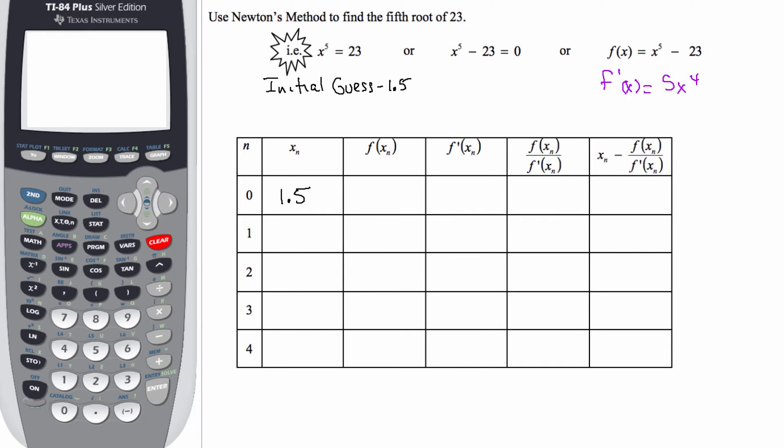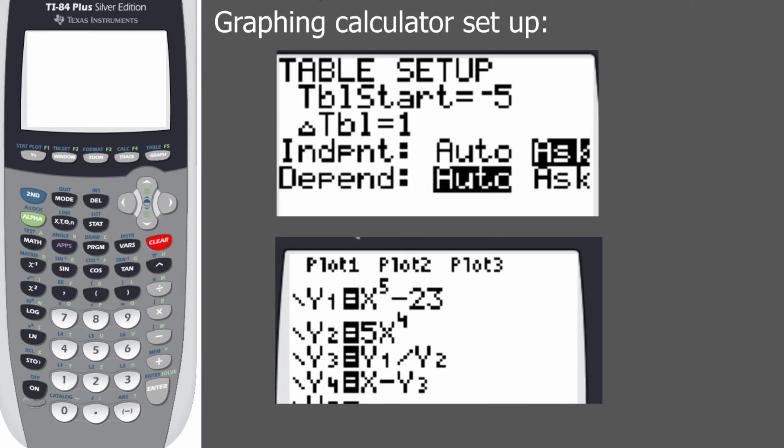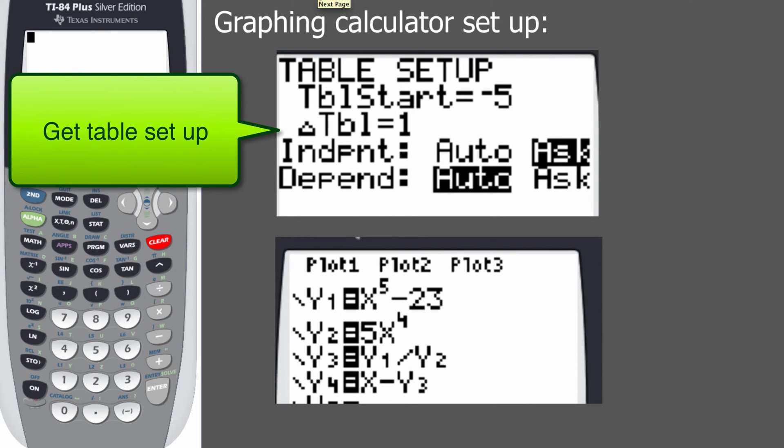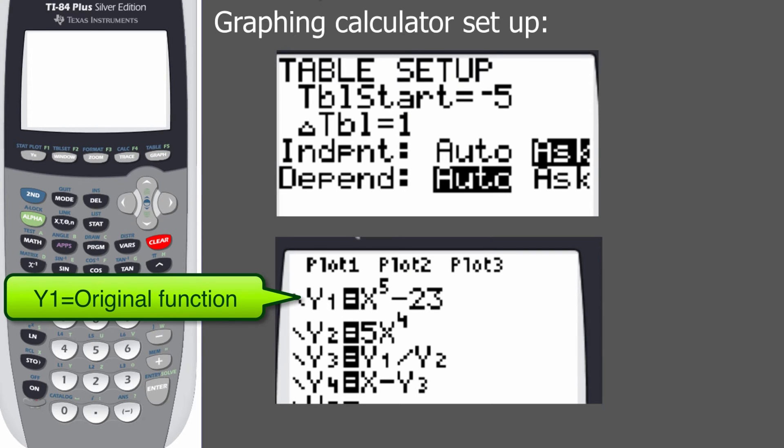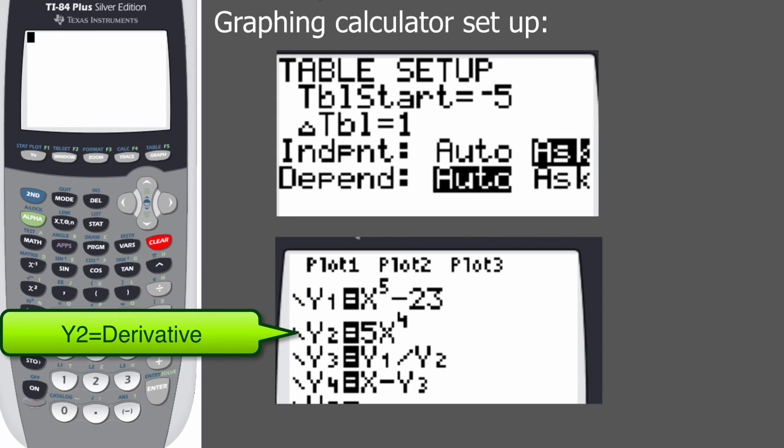What I want you to do is go ahead and set up your calculator like so. The first thing you want to do is set your table up so we can input our own values. So we're going to set our table on ask. Our independent variable is going to be set to ask. And to get there, remember you hit second and then the window key. Next, in the y equals menu, what we're going to do in y1 is put the original function. In y2, we're going to put the derivative of that function. And then in y3 and y4, those are going to be the other two columns.